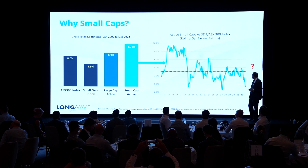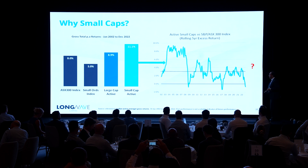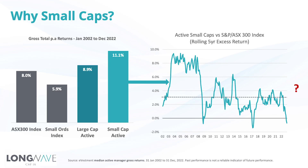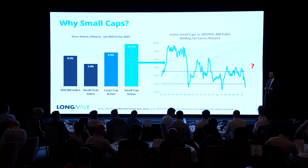But it's not necessarily a smooth ride. These are the rolling five-year excess returns of the median small cap manager versus the ASX 300. Over a long period of time, the performance is there. Coming out of recessions particularly, the returns from small caps can be very strong. But there are other times — like in 2008, 2017, and now — where small caps have struggled. The question is: does this look like a good opportunity to think about adding small caps into a client portfolio?